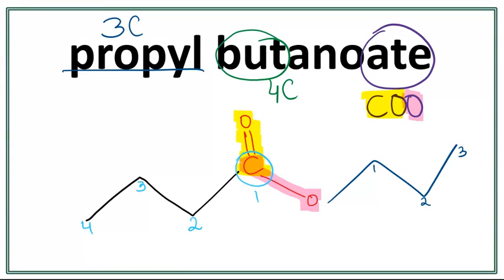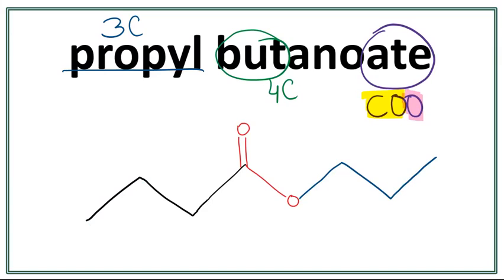Since we are drawing a line structure, we don't really need to draw out this carbon here. So let's get rid of this carbon and the numbers. This is the structure for propyl butanoate. The side chain always attaches with this oxygen right here, and the parent chain always attaches with this carbon right here.